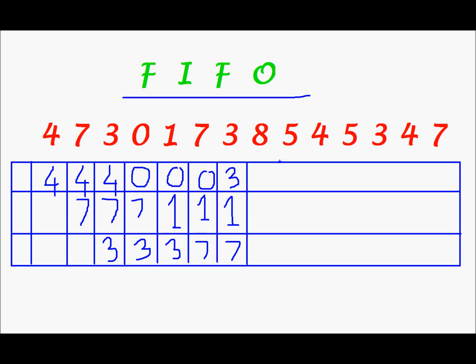Next, I have to bring in 8. And out of 3, 1, and 7, 1 was the first to enter, and so 1 shall be the first to leave. So 3 will be where it is, in place of 1 I shall write 8, and in place of 7, 7 will be there.